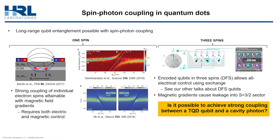Solid-state spin qubits are a promising platform for quantum information processing due to their long coherence times, fast operation, scalability, and mature fabrication technology. But one of the disadvantages of these systems is that interactions within them are relatively short-range.